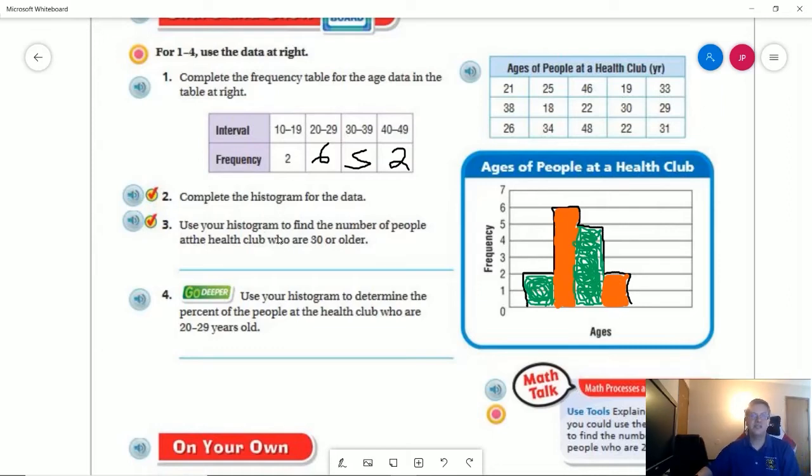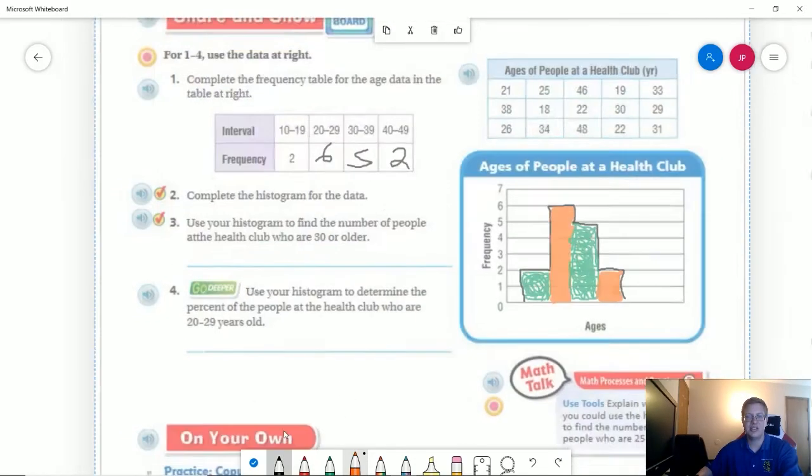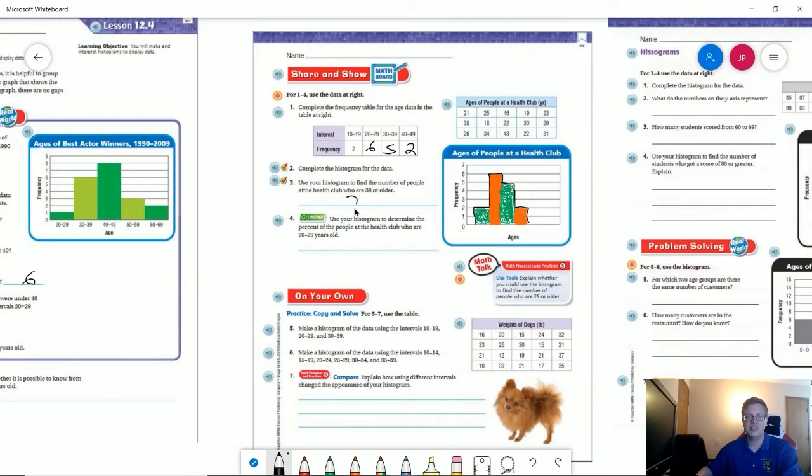I alternated colors and I didn't label it, so this should be labeled 10 to 19, this one should be labeled 20 to 29, this one should be labeled 30 to 39, and this one should be labeled 40 to 49. Using that to find the answer: the number of people that are 30 or older, I have five people for this part plus two and that would give us seven.